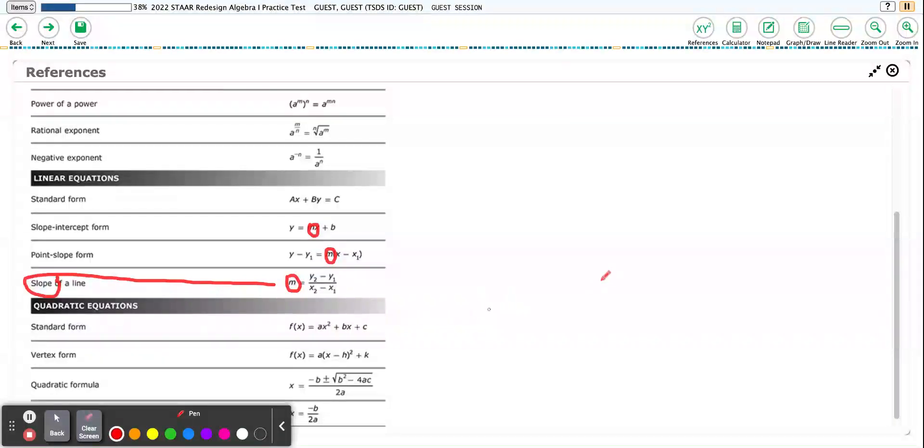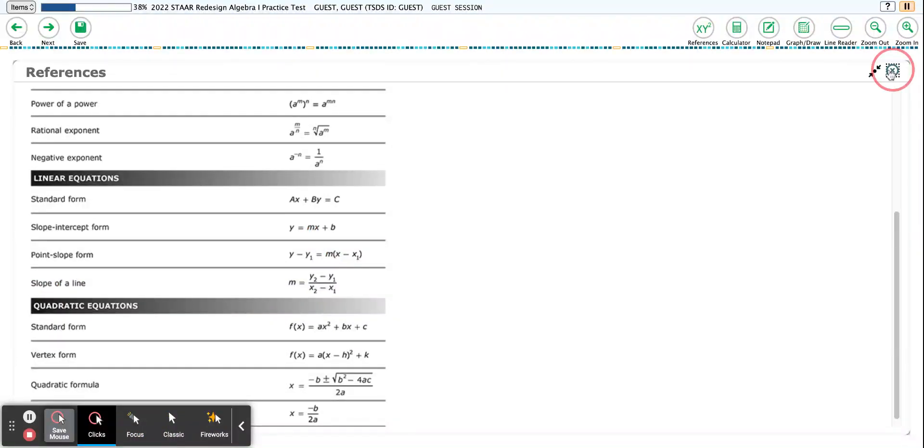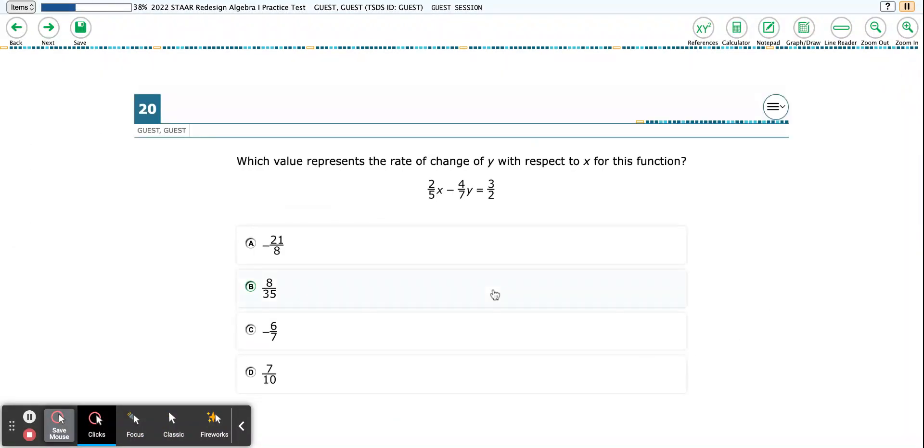This m is slope. So if you have trouble remembering that, there it is right there in our little cheat sheet. So if I clear that out and go back, I'm going to close my formula chart. I need it in y equals mx plus b.